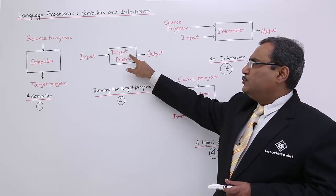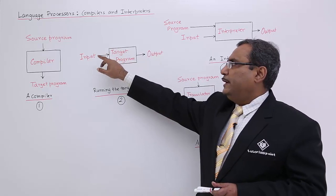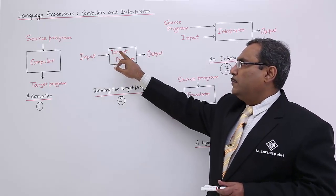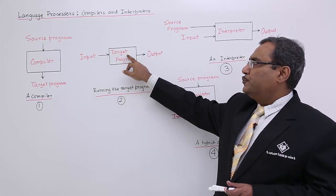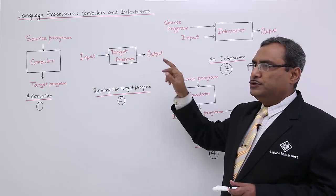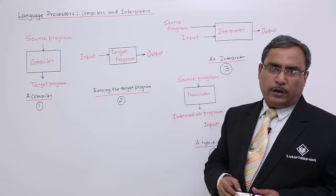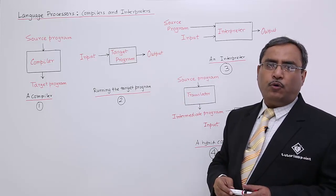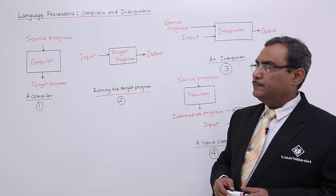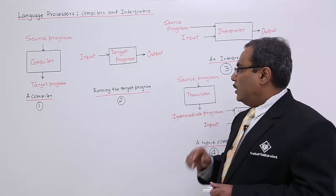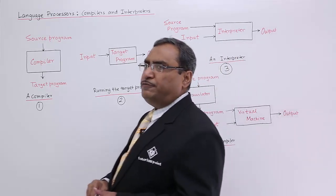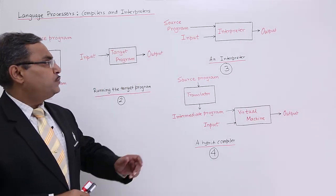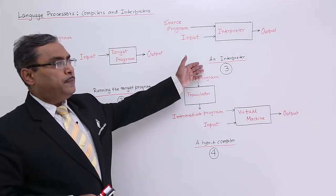During the execution process, it will take some inputs, process that input, and produce the required output — that is the purpose of program execution. Now, if you come to figure number 3, we are getting an interpreter.